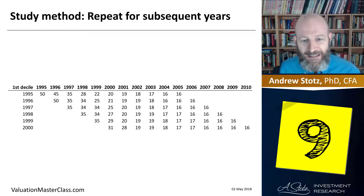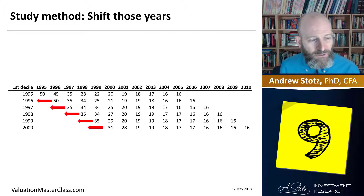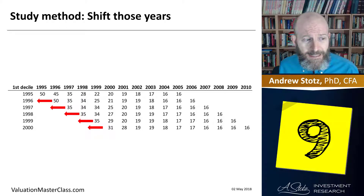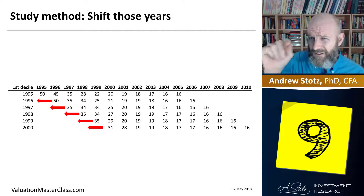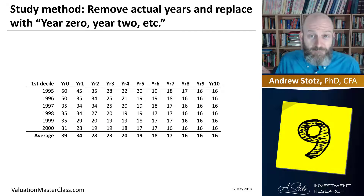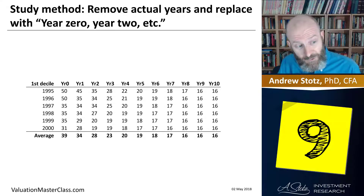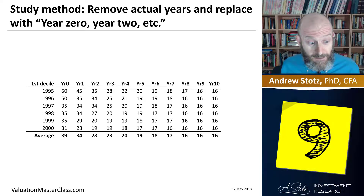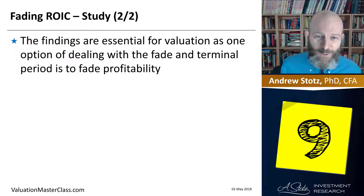We slide each yearly study over so we have a normalized table using year zero, year one, etc., rather than calendar years — since year zero for the first group is 1995 and year zero for the second is 1996. This allows us to take a simple average. The starting point is 39% ROIC for high return companies, and that fades down on average to 16%.